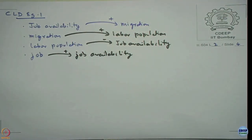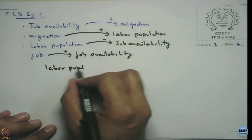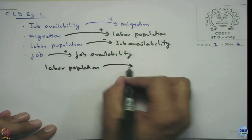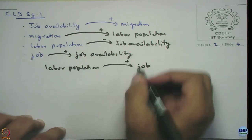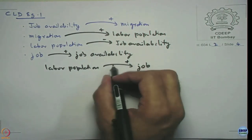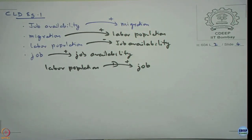There is one more statement with the same variable and two links. The labor population, after some time, increases jobs within the system. To indicate the delay, we put a D on the link to show there is a delay in the process. These are the initial set of causal links created based on the description, but it is cumbersome to read. We can combine them all into a nice causal map.